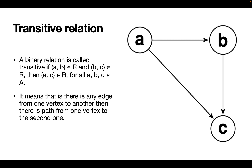What is the transitive relation? On the left you can see the formal definition and below the informal definition. A transitive relation means if there is an edge from one vertex to another, there should be a path from the first vertex to the second. So if there are edges from A to B and B to C, then there should be an edge from A to C. A good example is the comparison operator for numbers.